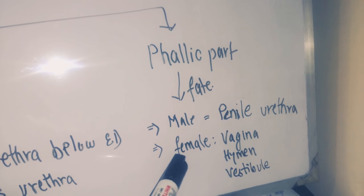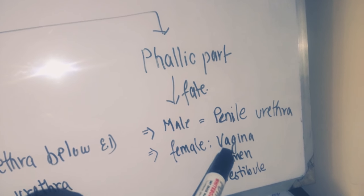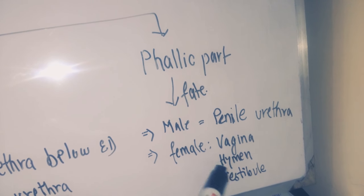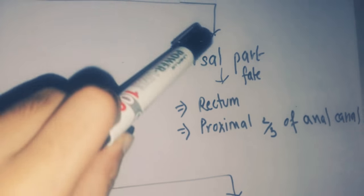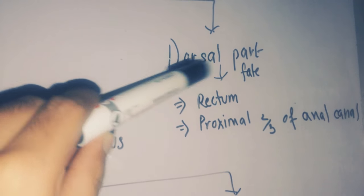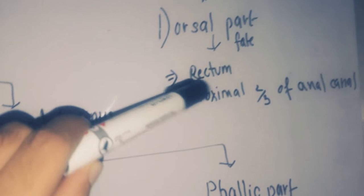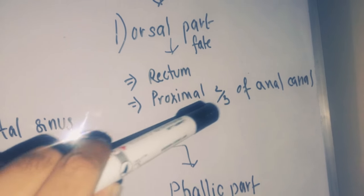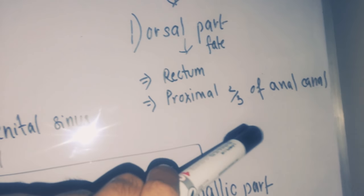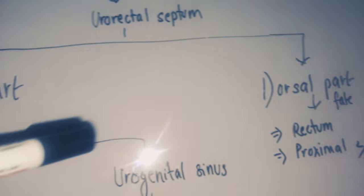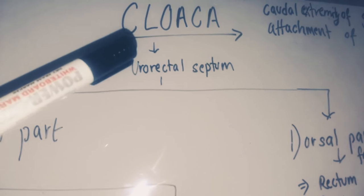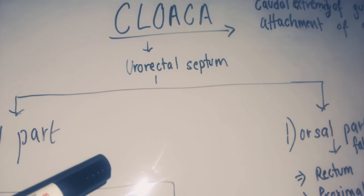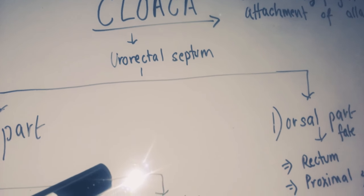In the female, the phallic part develops into the vaginal vestibule. The dorsal part of the cloaca develops into the rectum and the proximal two-thirds of the anal canal. This is an overview of the cloaca and its fate.